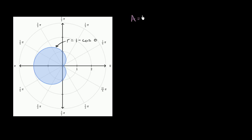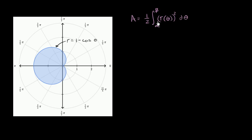We've already given ourselves the intuition for the formula that the area enclosed by a polar graph is going to be equal to one half the definite integral from our starting theta to our ending theta — from alpha to beta — of r(θ)² dθ. We just have to apply this to this function right over here.